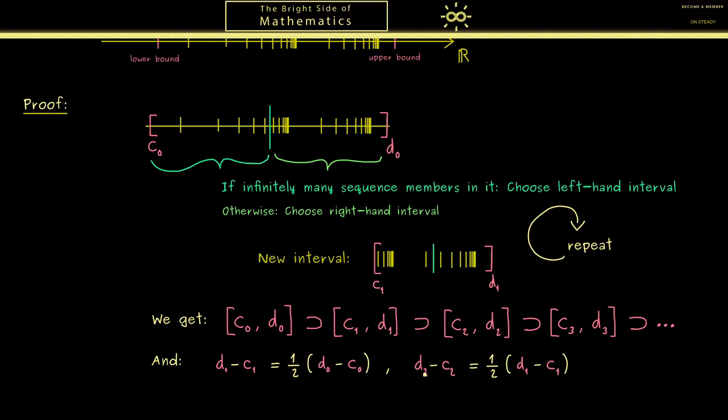In the same way, for d2 minus c2 we get one half of d1 minus c1, or in other words, one quarter of the original distance. Okay, by knowing this we can use induction to show the general statement for dn minus cn.